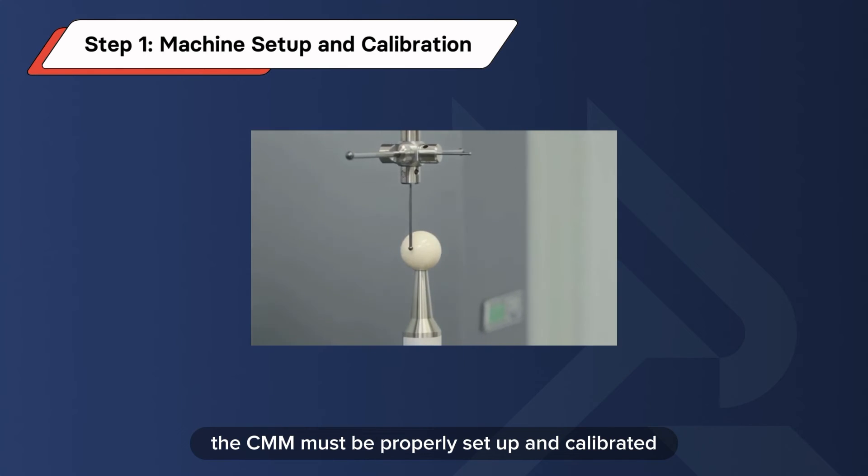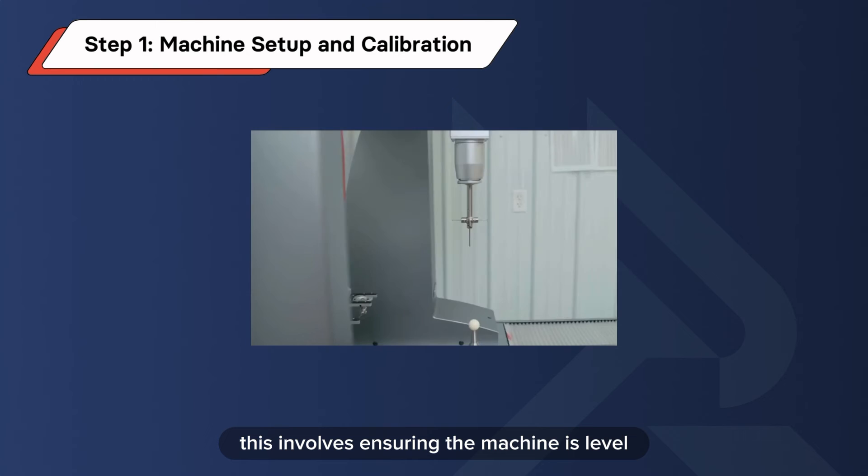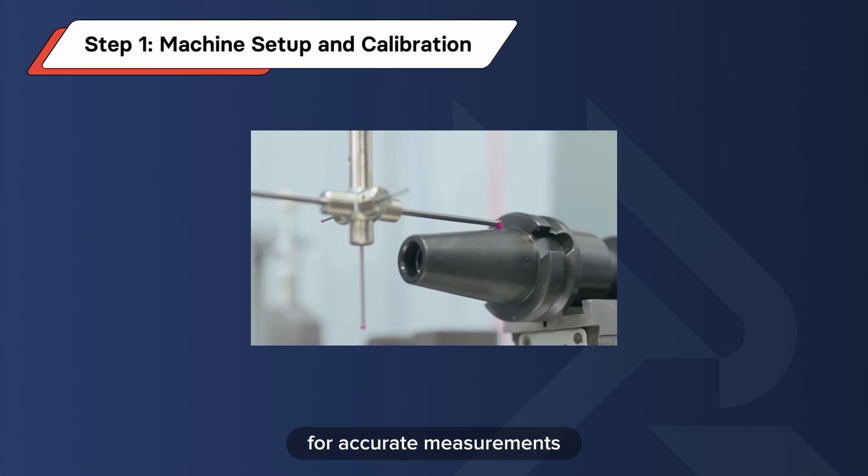Before measurement, the CMM must be properly set up and calibrated. This involves ensuring the machine is level and that its measuring probe is calibrated for accurate measurements.